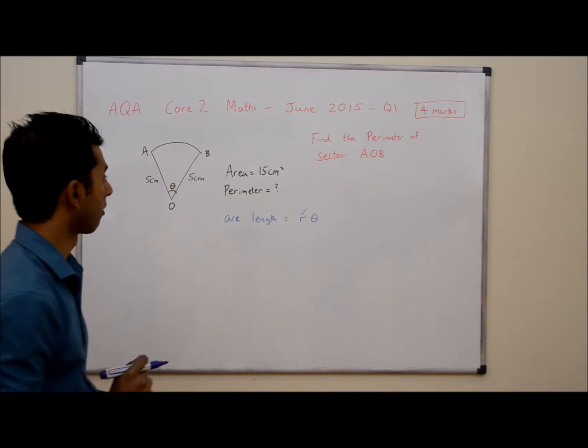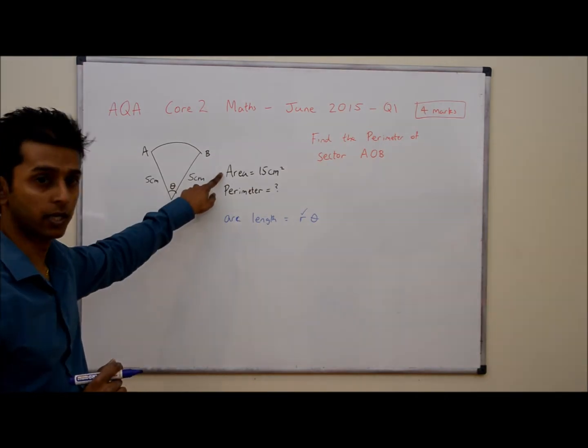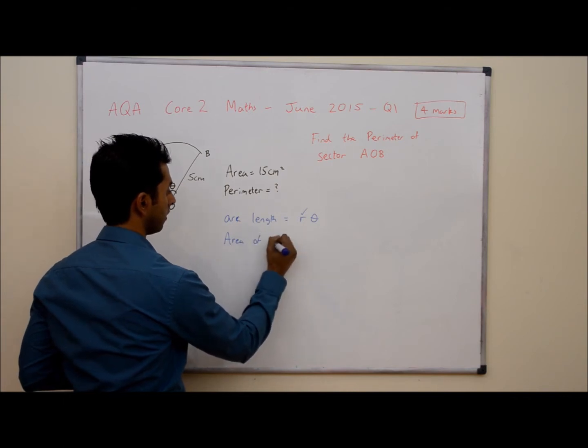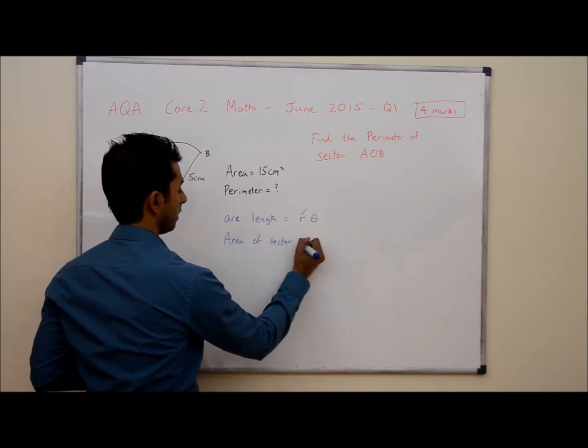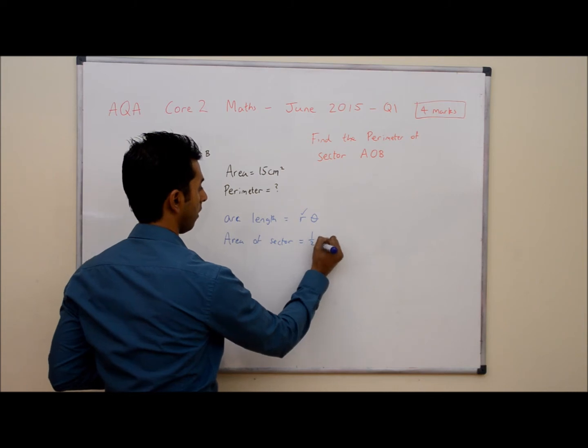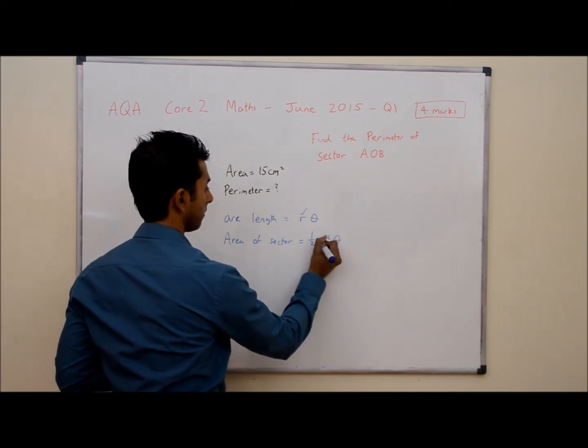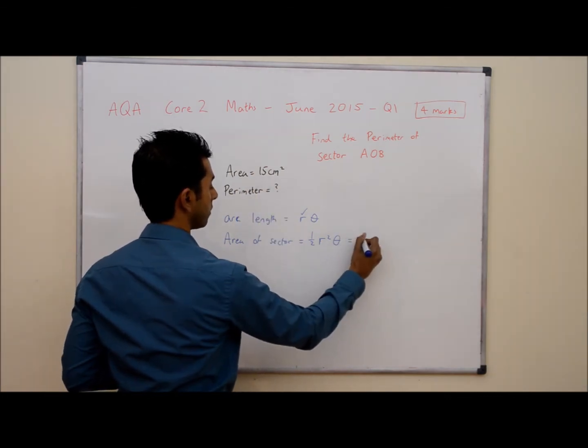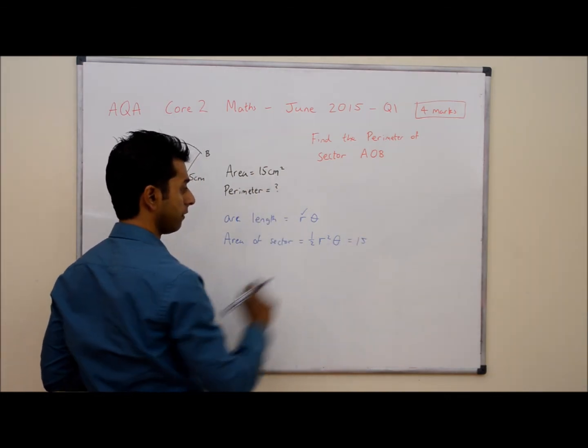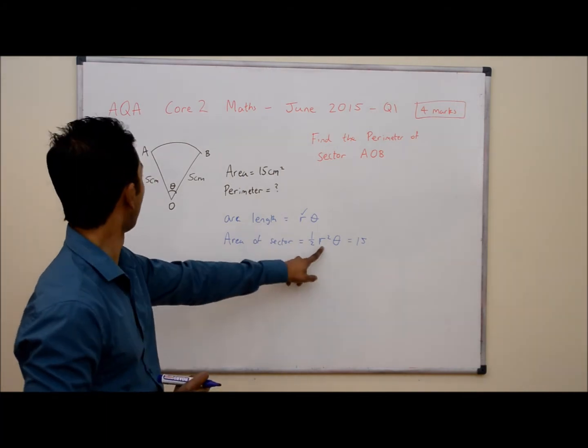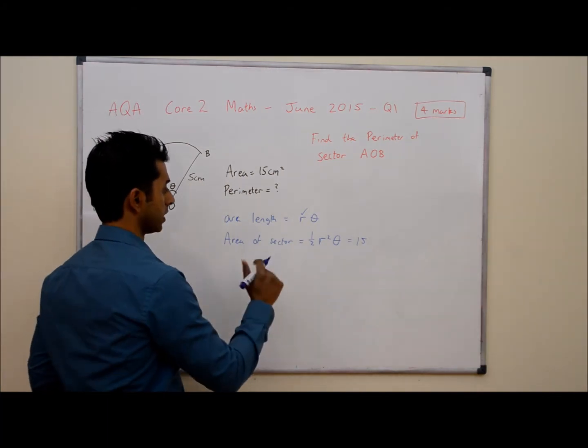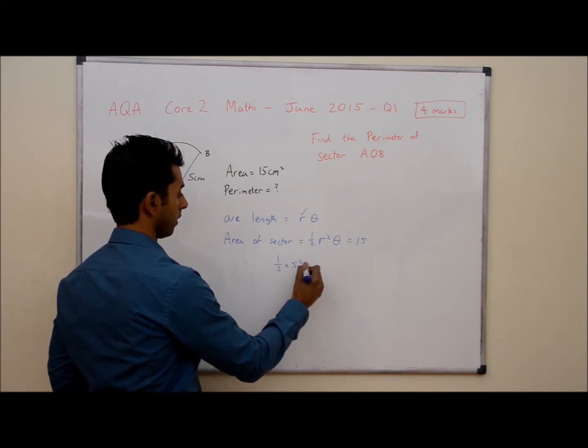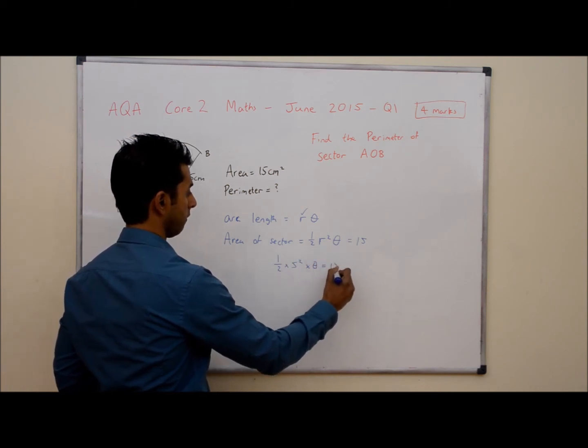So in order to work out theta we need to use this information here. The area of the sector formula is area of sector equals half R squared theta. We know that this is equal to 15. So half R squared theta is equal to 15. We also know that R is 5. So if we just substitute all of these numbers in: half times 5 squared times theta equals 15.